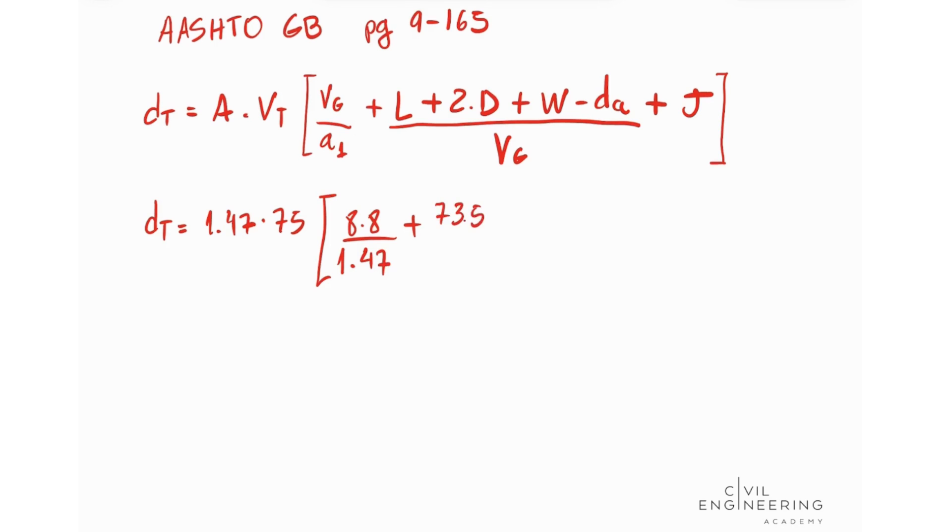plus 2 times D which is 15 plus W which is 5 minus D sub A which is 26.3, this all divided by 8.8 plus J which is 2.